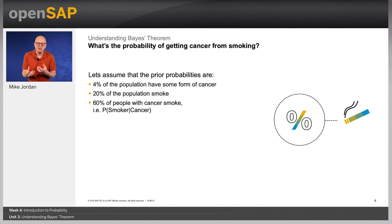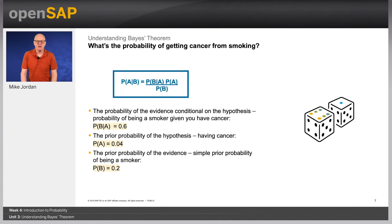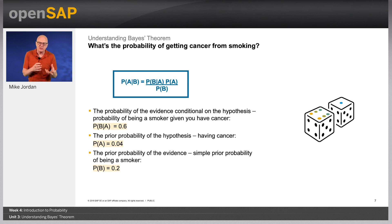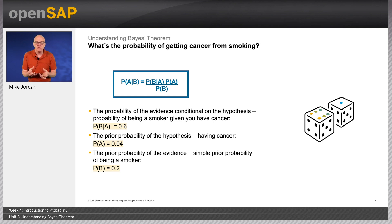The example here uses some invented values. Let's assume that 4% of the population have some form of cancer, 20% of the population smoke, and 60% of the people with cancer smoke — i.e., P(smoker | cancer). So the probability of the evidence conditional on the hypothesis, P(B|A), is 0.6. The prior probability of the hypothesis — having cancer — P(A) is 0.04. The prior probability of the evidence — the probability of being a smoker — P(B) equals 0.2.